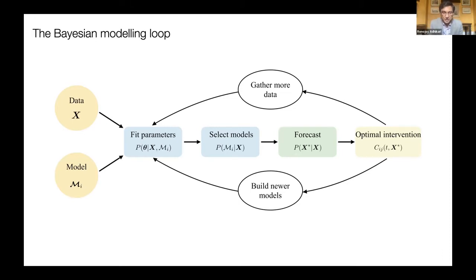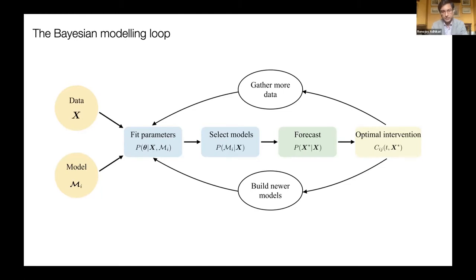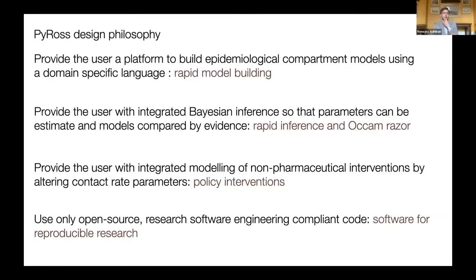This is the general modeling loop in any discipline, and it applies to epidemiology as well. What we were trying to do was make this loop as quick as possible. We were faced with a situation where new data was changing fairly rapidly and the models had to be adapted to the data, so we wanted to ensure this loop could be done reproducibly, efficiently, and as error-free as possible.